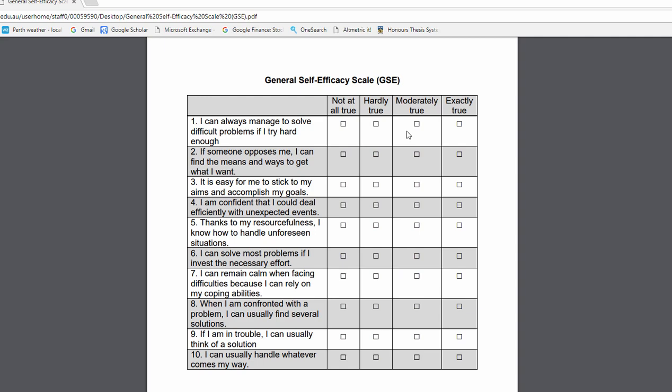So you get a 1, 2, 3, and 4. Do that for all 10 items and you can score anywhere from as low as 10 to as high as 40.